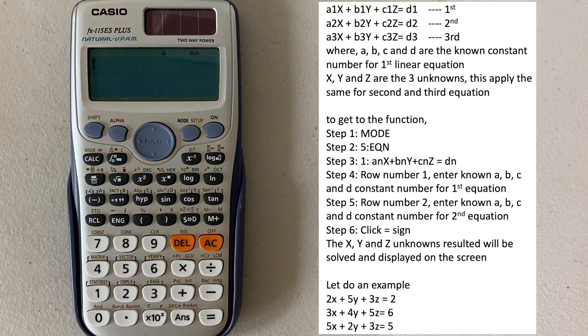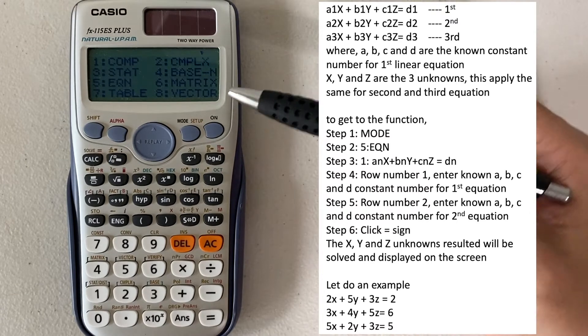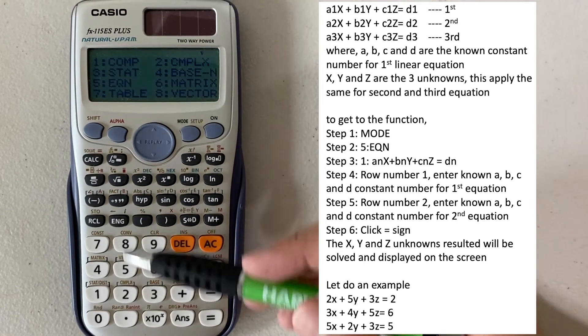So now let's try to get to the function from the calculator. In order to reach the function, first select the mode. Here you see number 5, which is EQN equation. Select that.